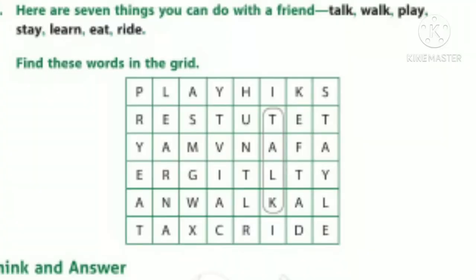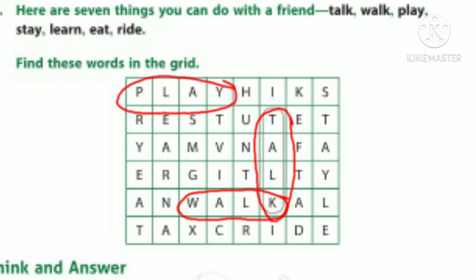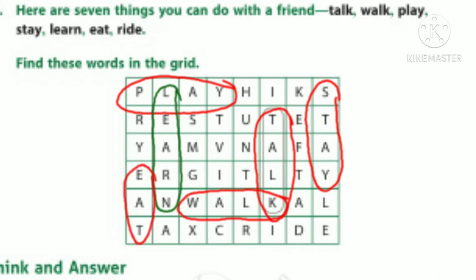You need to find out the words: talk, walk, play, stay, learn, eat, ride. Talk and walk — can you find them? Yes, we got it. And the next word, play — it's in the first line of the box. And the next word, stay — it's on the left side of the box. And the next word, learn — do you find it? And the next word, eat — it's on the right side of the box. And the last word, ride. All of you find out the words in your page number 36 and circle them.